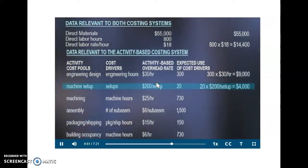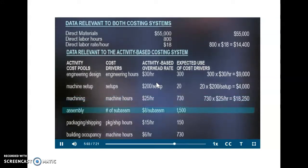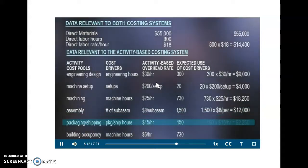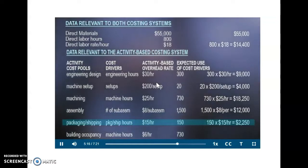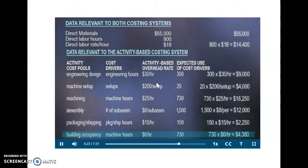Machining, 730 machine hours at $25 per hour equals $18,250. Assembly, 1,500 sub-assemblies at $8 per hour equals $12,000. Packaging and shipping, 150 hours at $15 per hour equals $2,250. Building occupancy, 730 machine hours at $6 per hour equals $4,380.